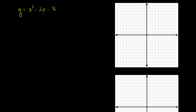By doing that, we're able to figure out the x-intercepts — where we're intersecting the x-axis. And then using that, we'll be able to figure out the vertex. So let's just factor this quadratic on the right-hand side.